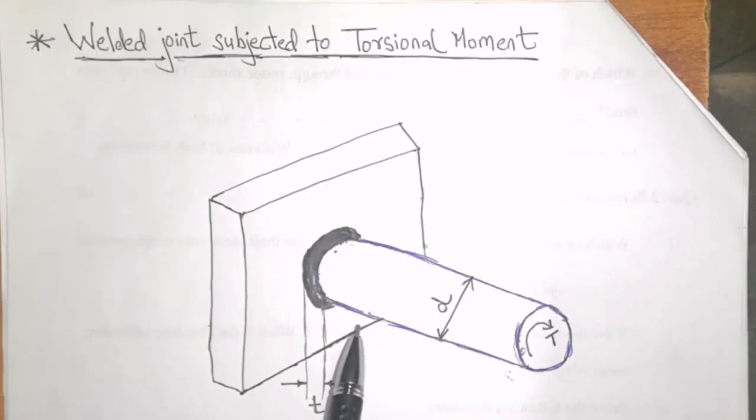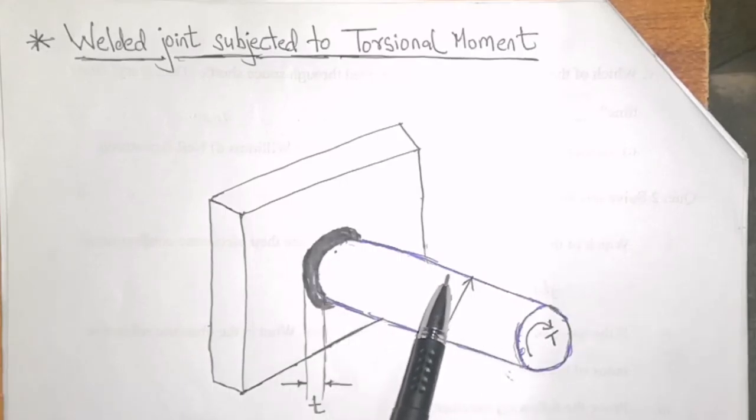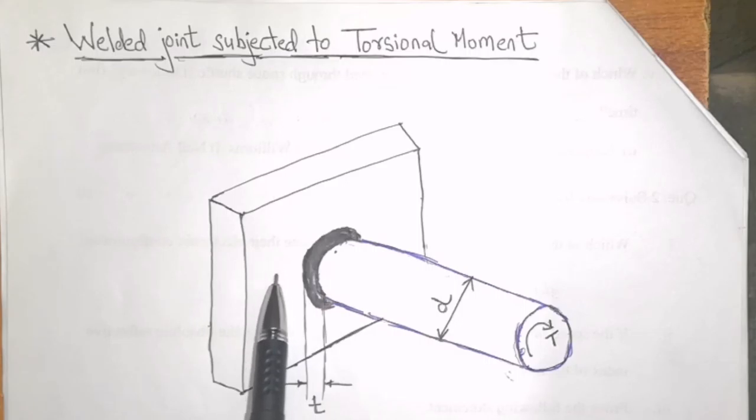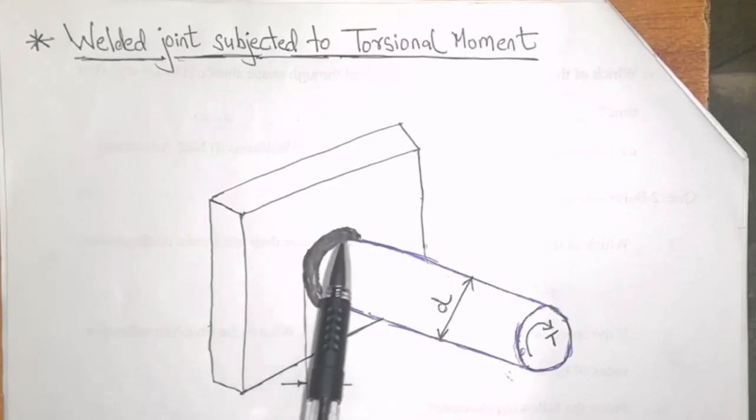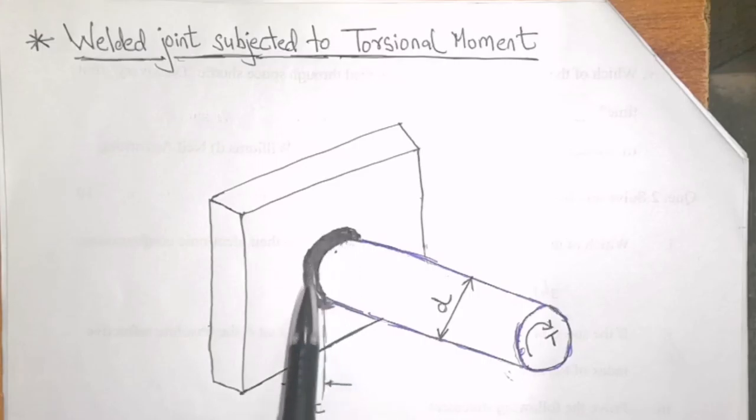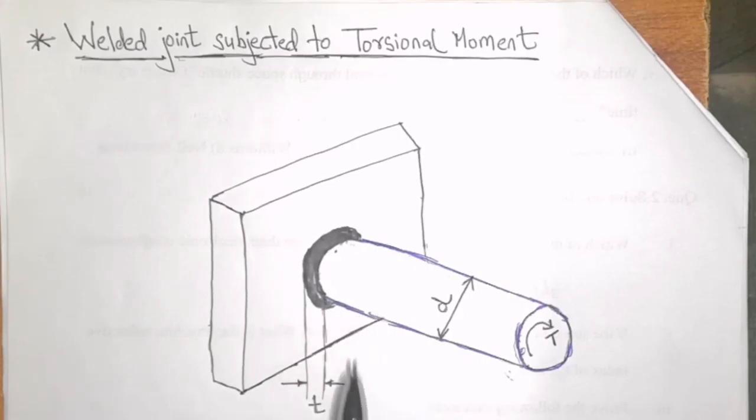Consider a shaft of length L and diameter D welded to this support by means of this circumferential weld. This shaft is subjected to a torque T.